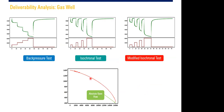For gas reservoirs, we can do back pressure tests, isochronal tests, and modified isochronal tests. By using multi-rate tests, we can get four data points plotted to construct the IPR for a gas well. The same principle applies: for oil or gas reservoirs, we perform well testing, get flow rate and flowing pressure, and use equations to construct the IPR that describes the performance of our reservoir.